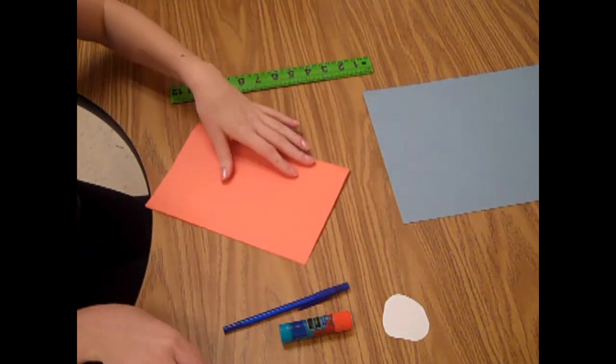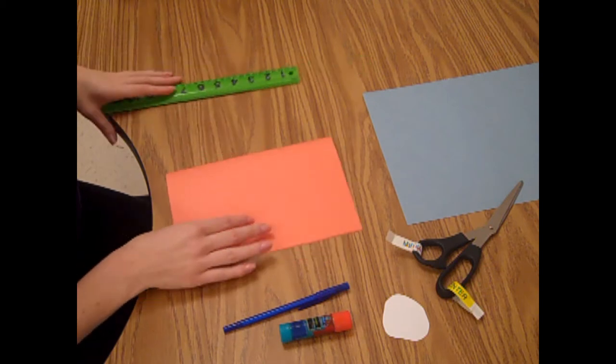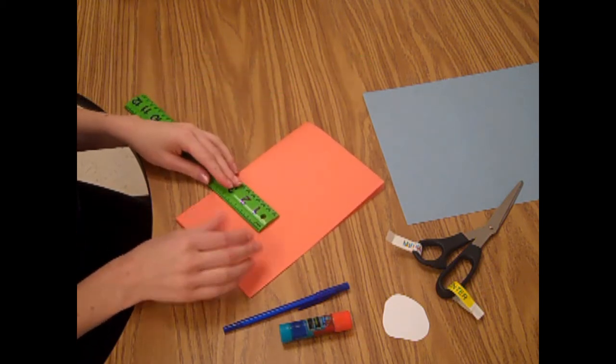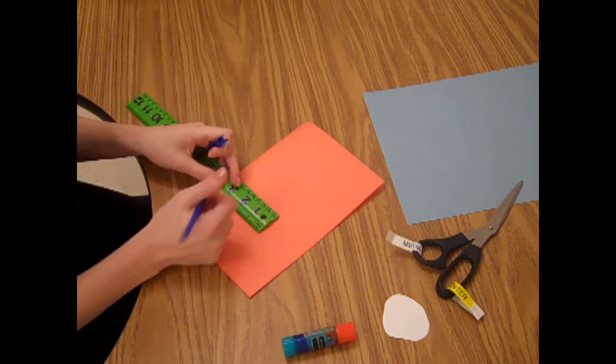Now once you have done that, you'll take your ruler and draw how long you want your lines for your cutout stuff.